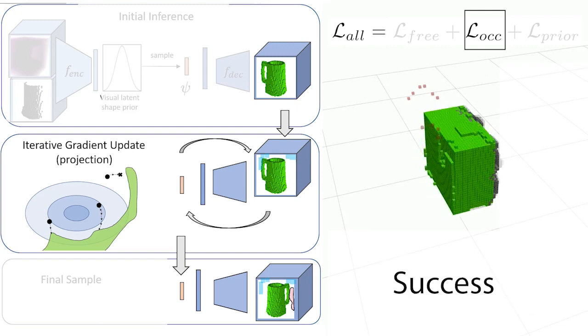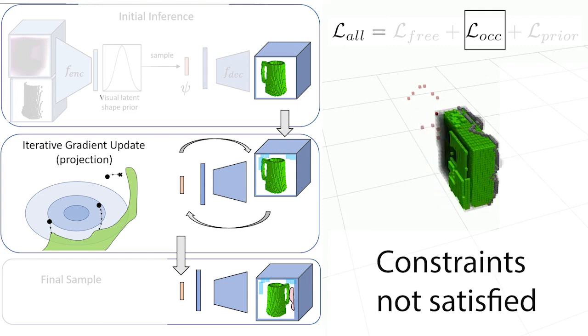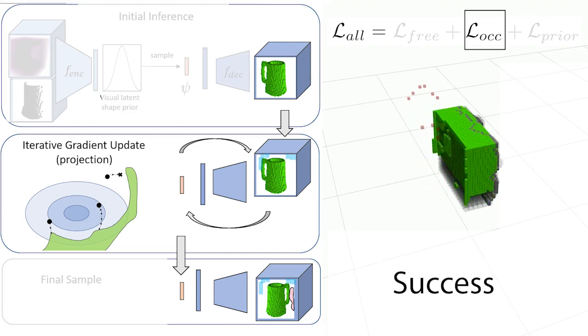Not all projections succeed. We approximate a belief of the shape using many samples, as in a particle filter. Only the projections that satisfy both the free space and contact constraints contribute to the final belief.